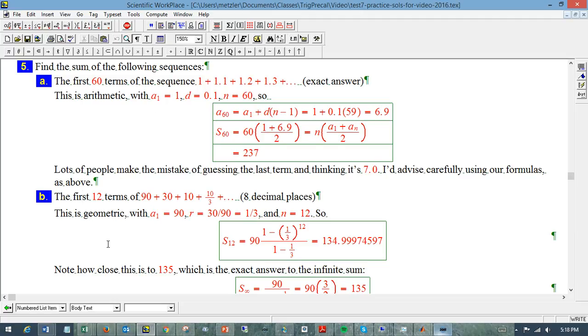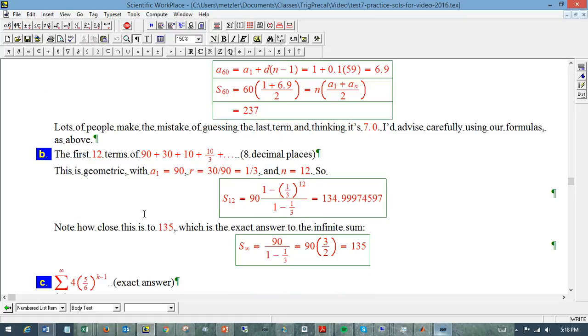What about the first 12 terms of 90 plus 30 plus 10 plus 10 thirds plus, and I have this kind of weird thing, give me the answer to 8 decimal places. Why on earth would I want to do that? Well, we'll see. So, the claim is this is geometric. 90 times a third is 30, times a third is 10, times a third is 10 thirds. That 3 in the denominator is kind of a giveaway, that the ratio has something to do with thirds. So, that's our common ratio. N equals 12, it's given.